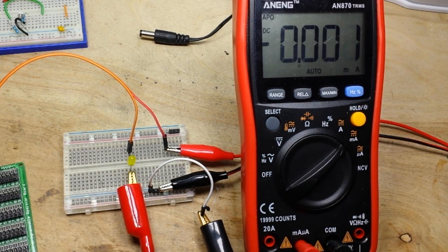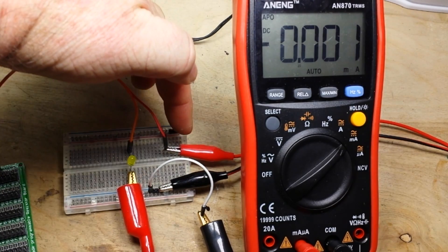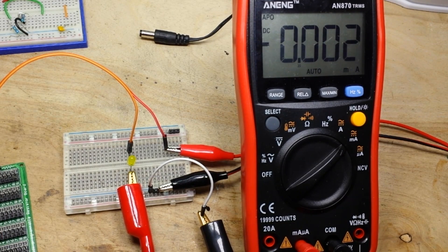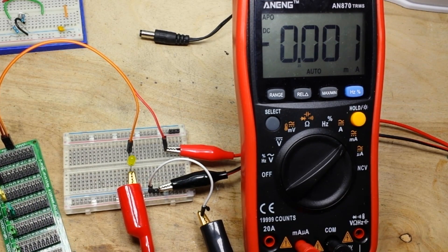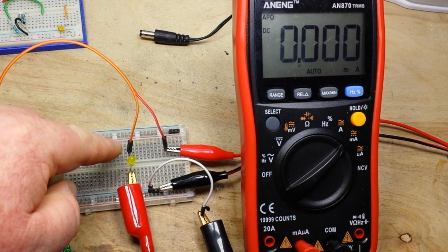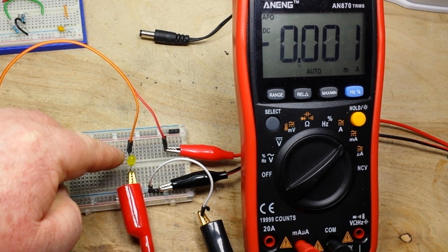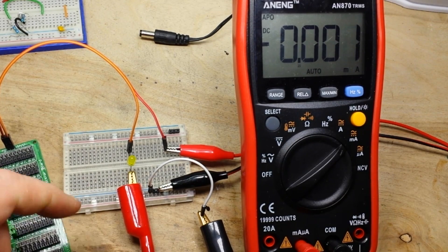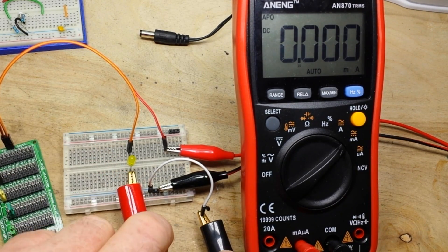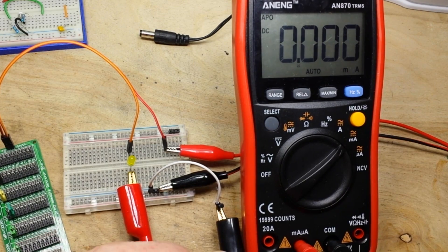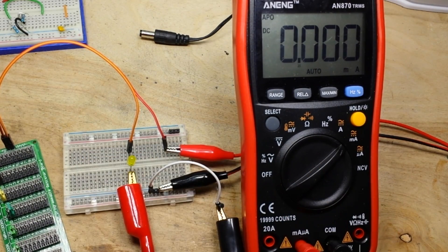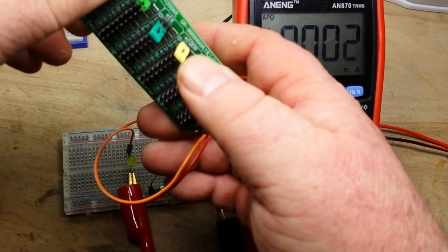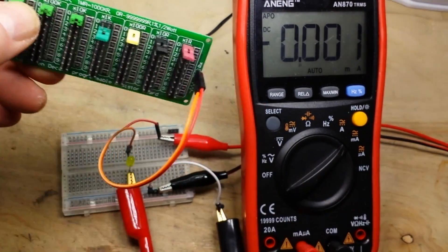We are all set up here. We have the power from the power supply going into this red wire, which goes into my decade box resistance box. And then it comes out through this orange wire into the anode of the LED. So, we're putting a resistor before the LED. Then we're coming out of the cathode of the LED into these two, which are reading the current over here.